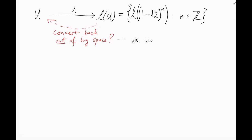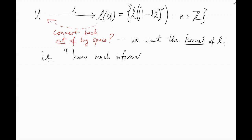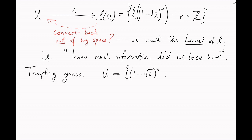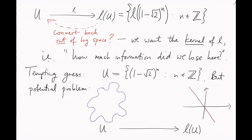What we're really asking for is the kernel of L. That is, when we passed from u to L of u, how much information did we lose? You might be tempted to guess that u is just the set of all integer powers of 1 minus root 2. But that's not quite true.